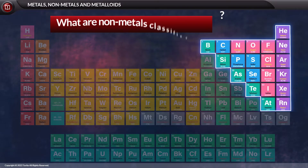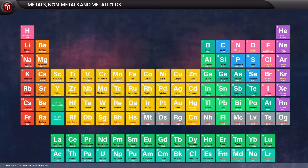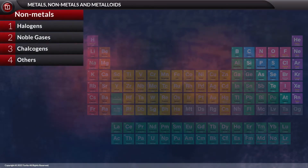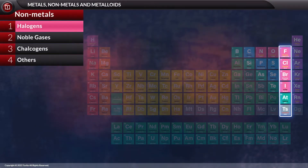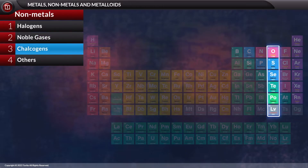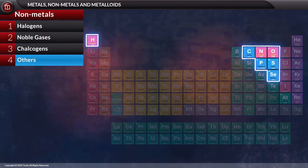What are non-metals classified into? The non-metals are classified into halogens, noble gases, chalcogens, and other non-metals.